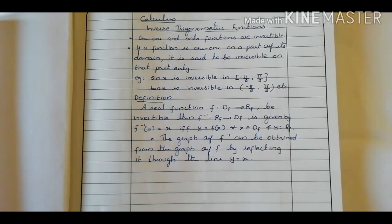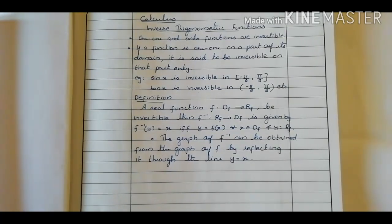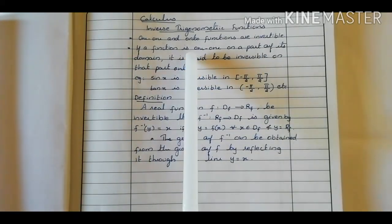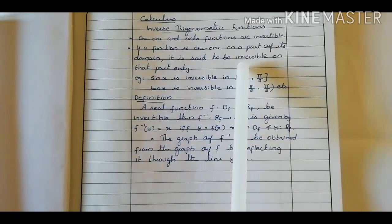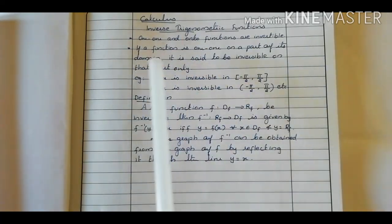If you take the closed interval pi by 2 to 3 pi by 2, for that particular interval also you will get distinct images for sin x. So if you take some intervals, then for that particular interval you will get distinct images for sin x. That is the same for other trigonometry functions also. So if a function is one-one on a part of its domain, it is said to be invertible on that part only.